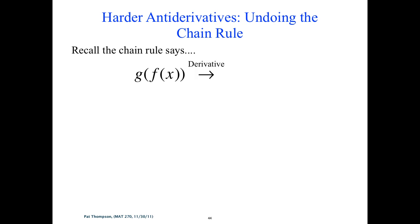What does the chain rule say? If you have a composite function g of f of x, the derivative is g prime of f of x — not g prime of f prime, which is a really common mistake — but g prime of f, and here's where the chain comes in, times f prime. We've got to know that cold if we're going to be able to undo it.